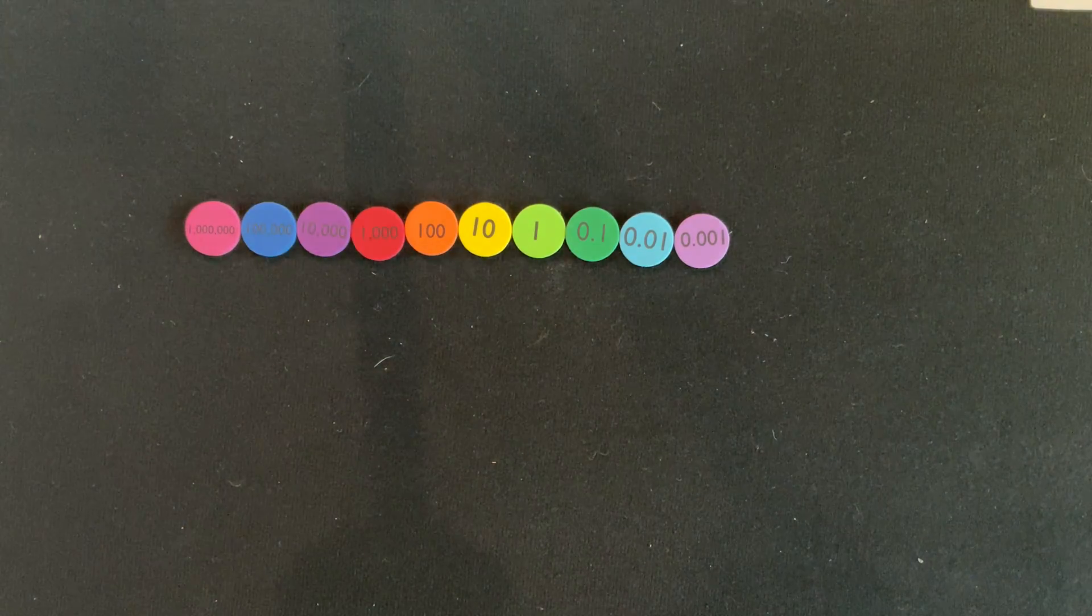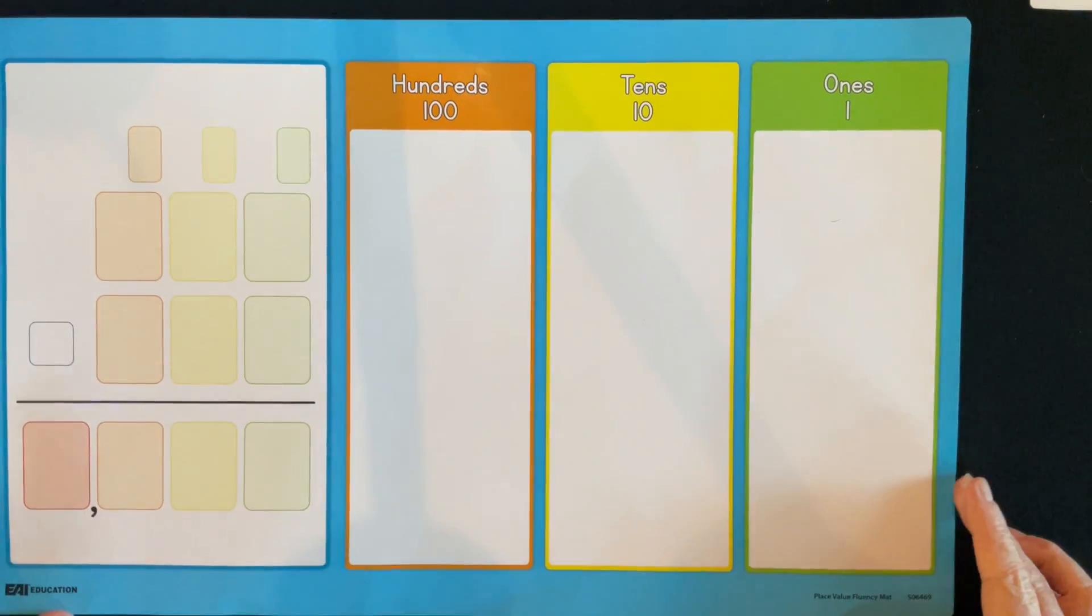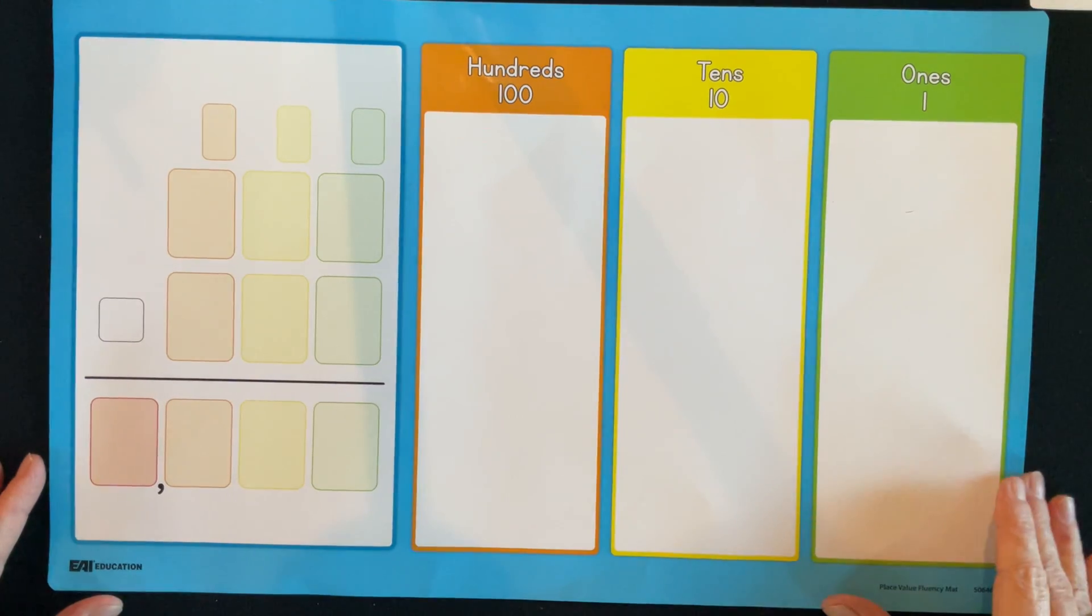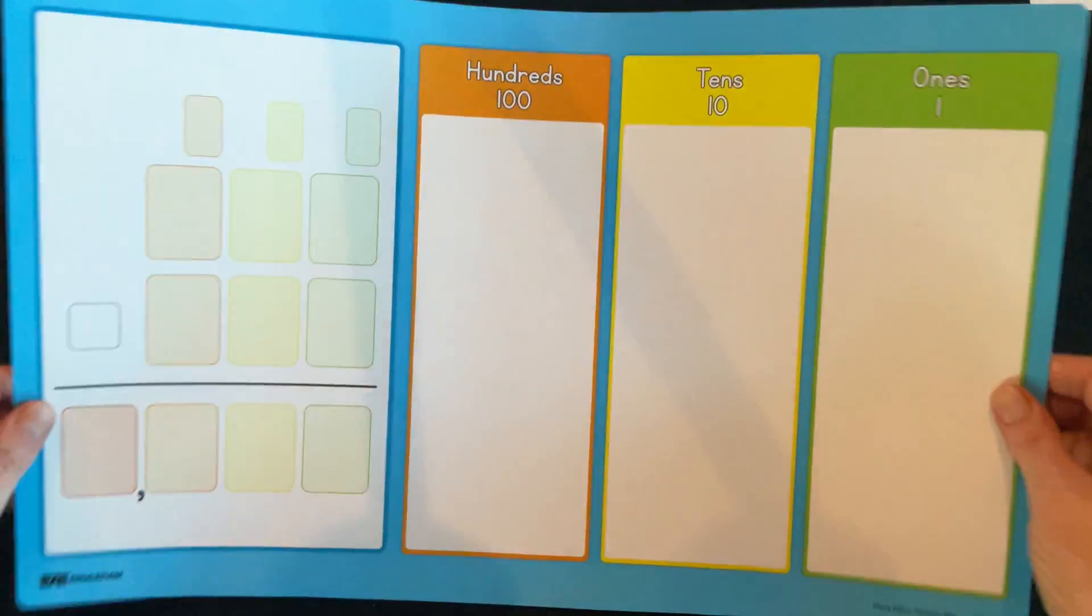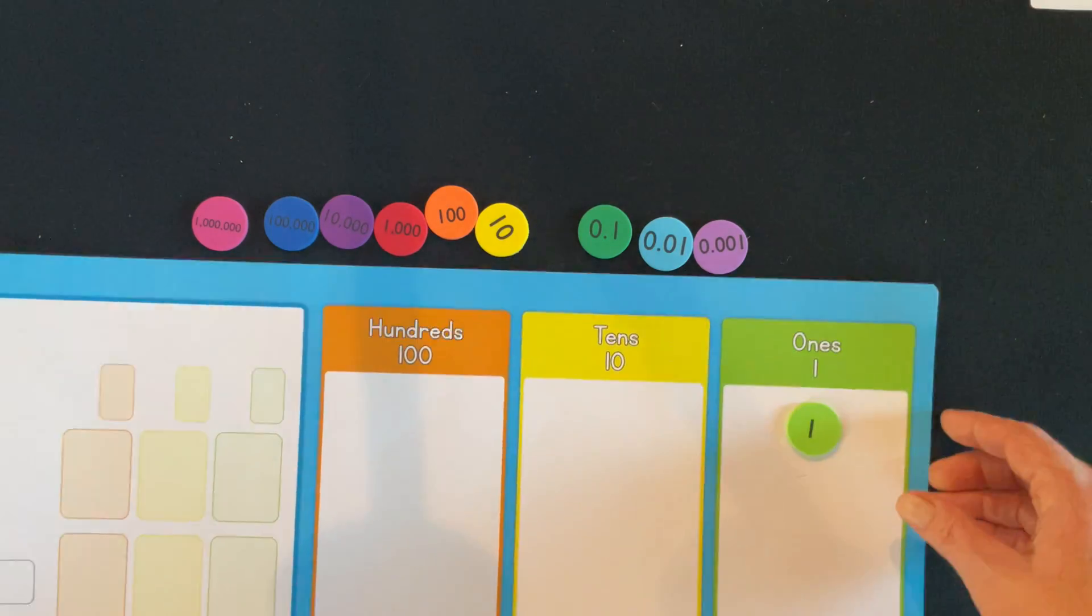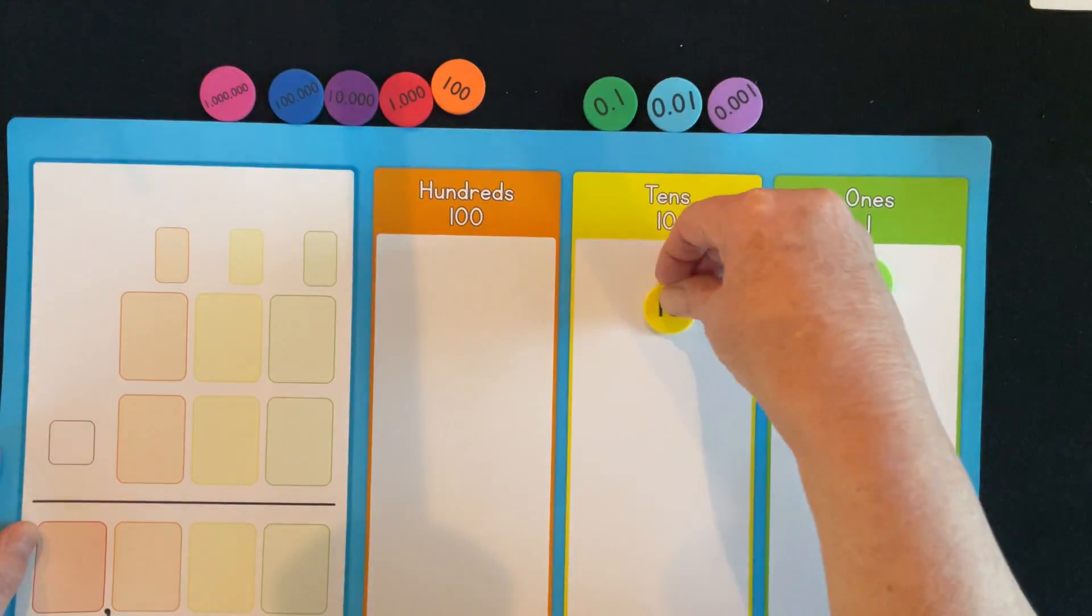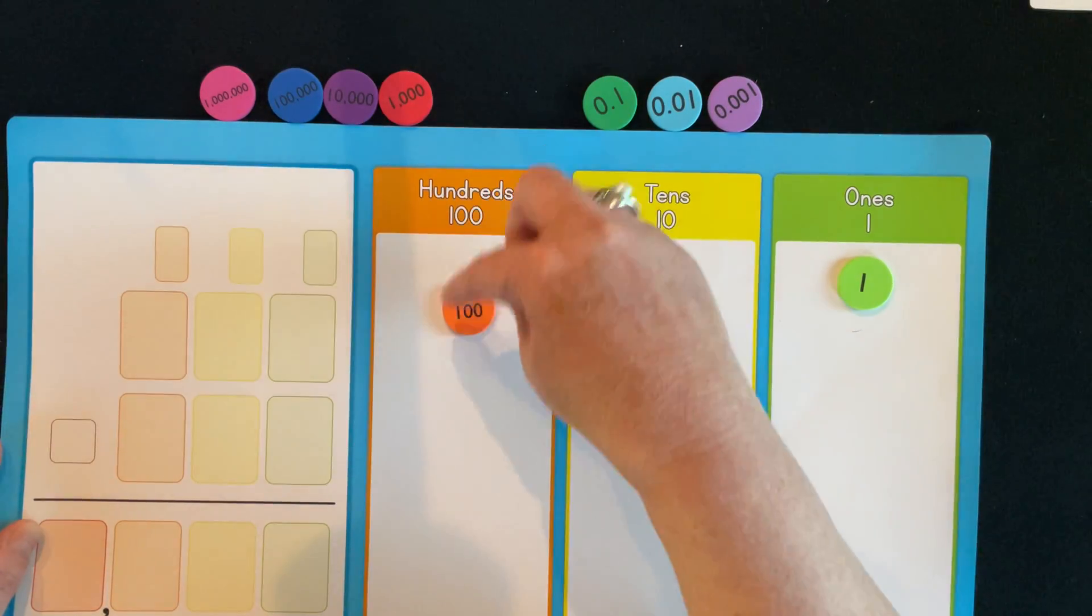The reason they're color-coded is because you also have the availability of having some mats that children can directly work on, and we wanted to match. The ones is the green, and I hope you can see that. Your tens will be represented with yellow and the orange with hundreds.